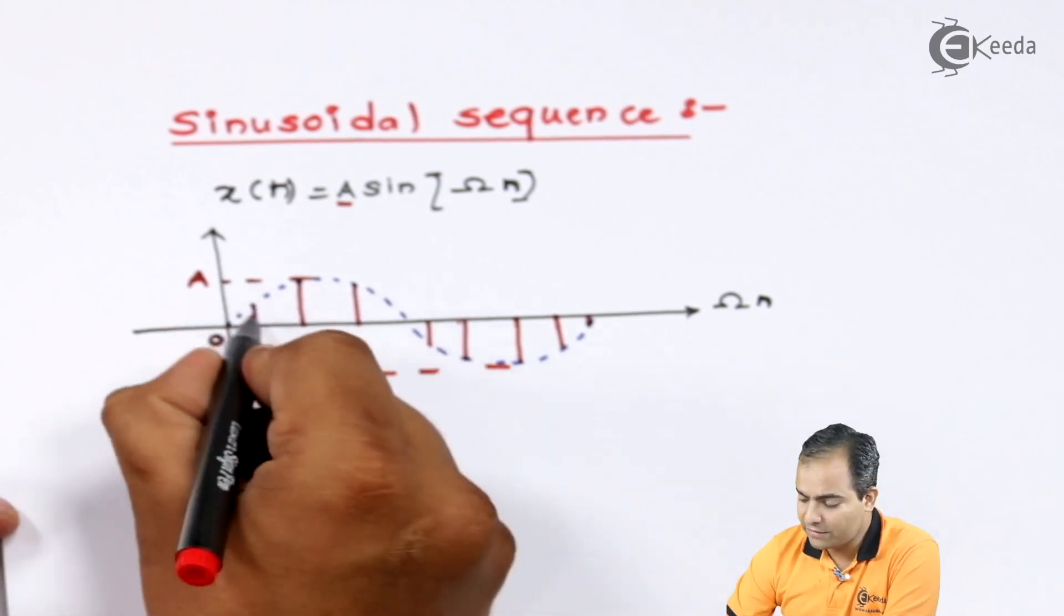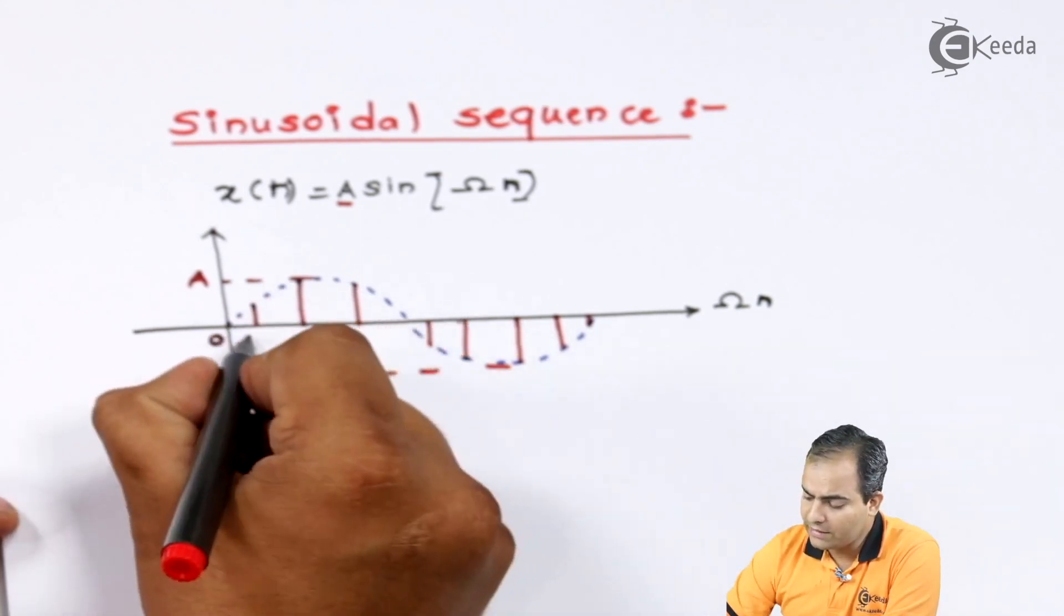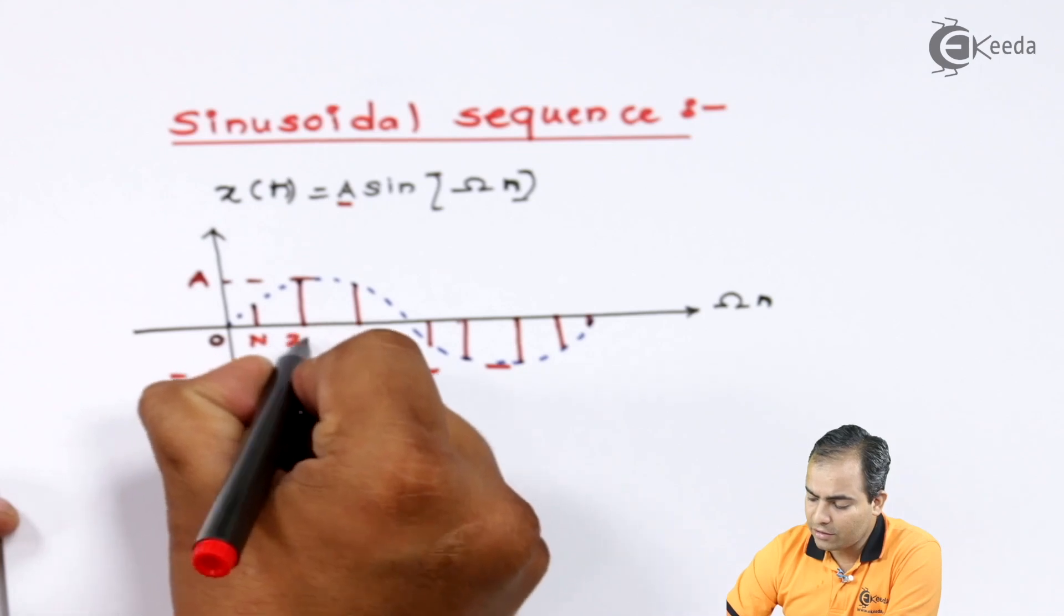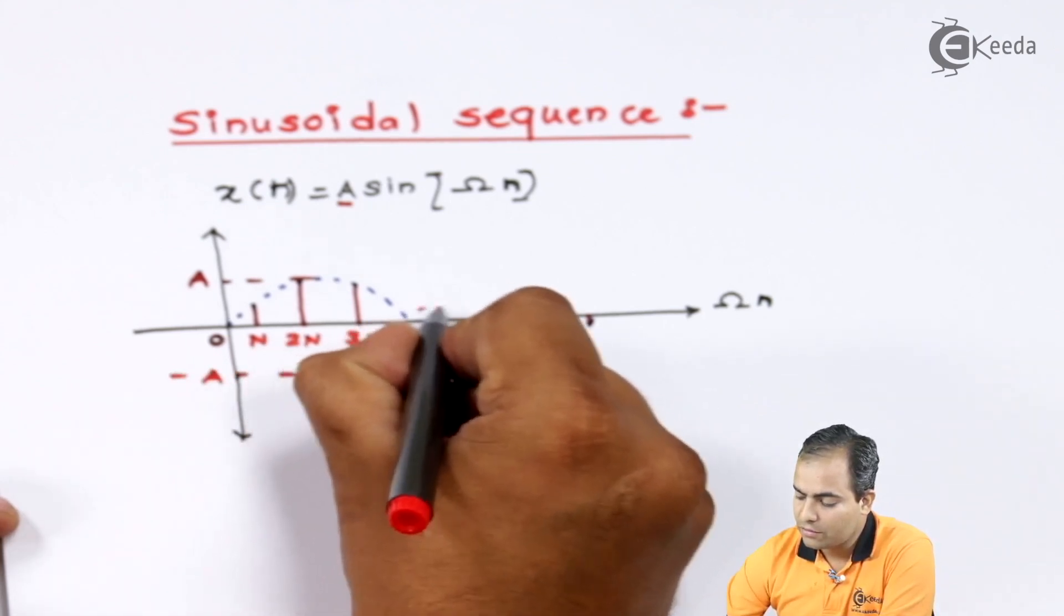And this graph is discrete, that's why these are the samples that I have plotted over here. Let's say this is the first n, 2n, 3n, and so on.